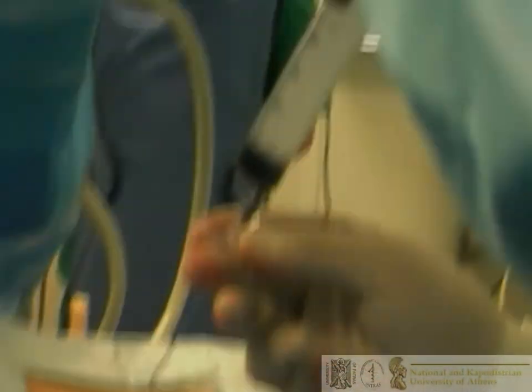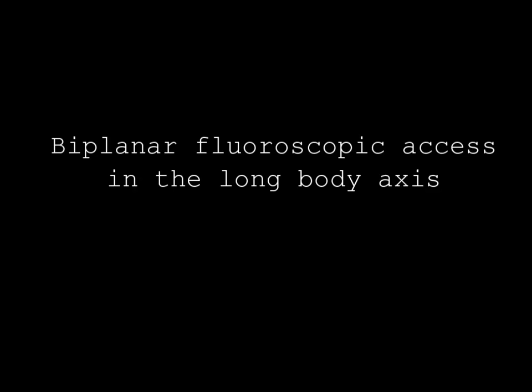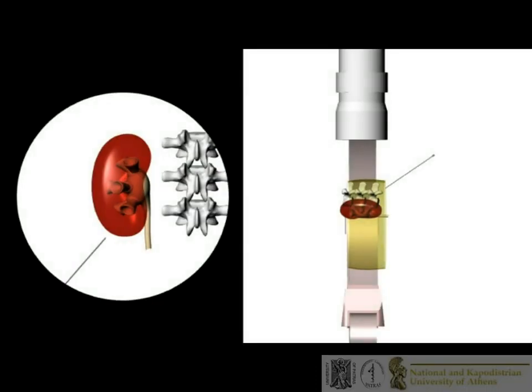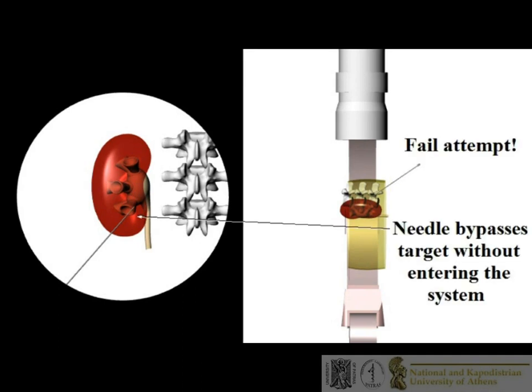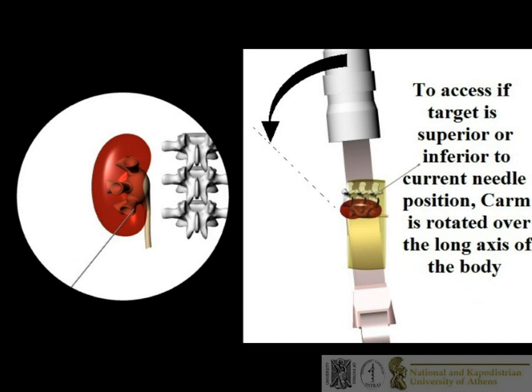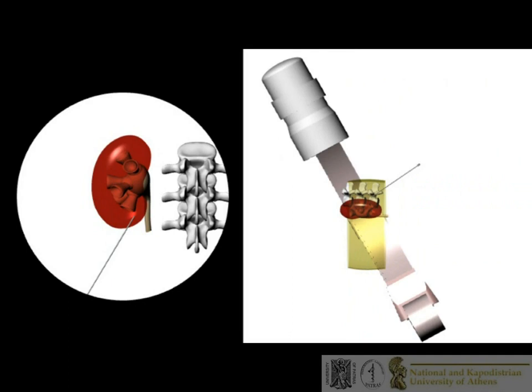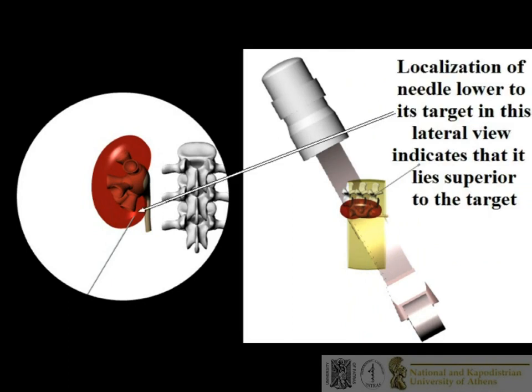Biplanar fluoroscopic axis — in the long axis of the body: similarly to the monoplanar axis, the needle is angulated towards the target based on the surgeon's experience and advanced towards the calyx. Failure to access the calyx is recognized when the tip of the needle bypasses the target in fluoroscopic view without entering the system. To assess if the tip of the needle is superior or inferior to the target calyx, the CRM is rotated towards the head or the feet of the patient.